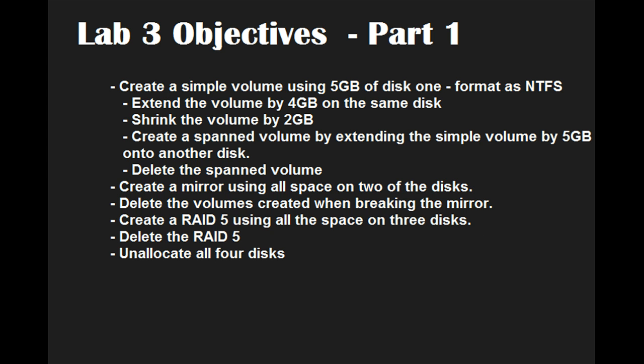Lab 3 has three parts. For part 1, we will be creating a simple volume using 5GB of disk 1, formatted as NTFS. We will extend the volume by 4GB on the same disk, shrink the volume by 2GB, create a span volume by extending the simple volume by 5GB onto another disk, then delete the span volume. We will create a mirror using all the space on 2 disks, delete the volumes created when breaking the mirror, create a RAID 5 using all the space on 3 disks, then delete that RAID 5 and unallocate all 4 disks of data.